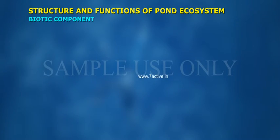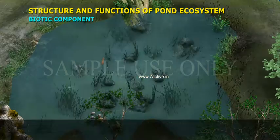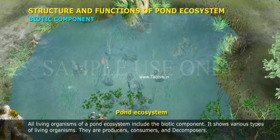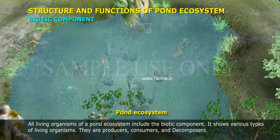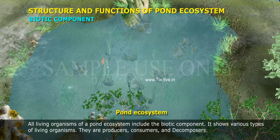Biotic Component: All living organisms of a pond ecosystem include the biotic component. It shows various types of living organisms. They are producers, consumers, and decomposers.